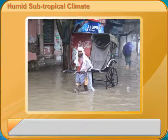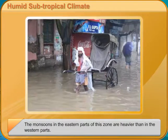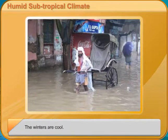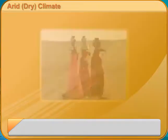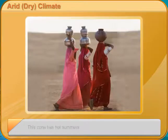Semi-arid, semi-dry climate. This zone has hot summers. During monsoons, this zone receives a little more rain than the arid region. The winters are cool. This zone flanks the arid zone. Parts of northwestern Gujarat and Madhya Pradesh have this kind of climate.